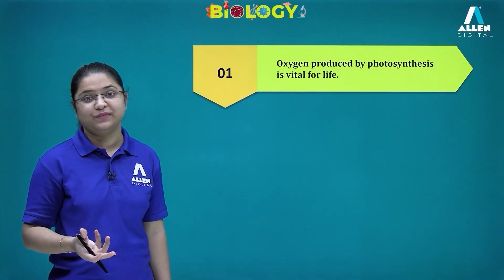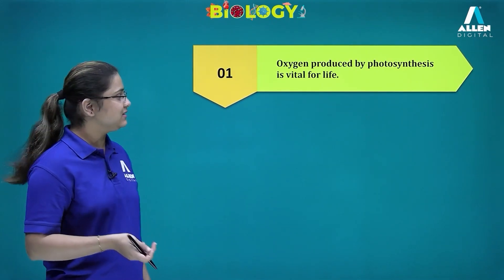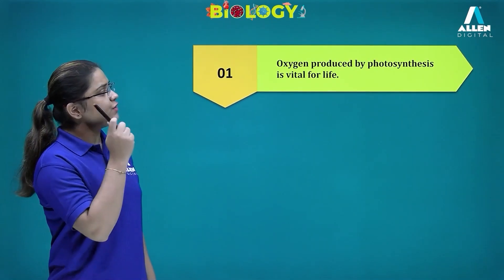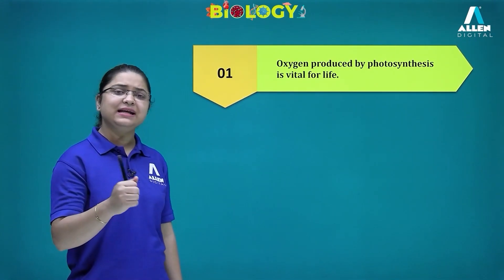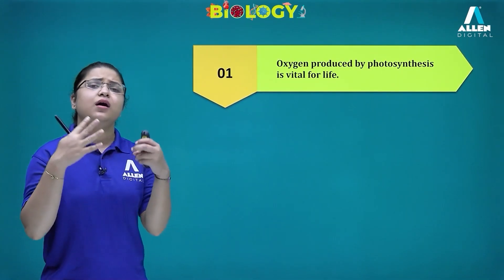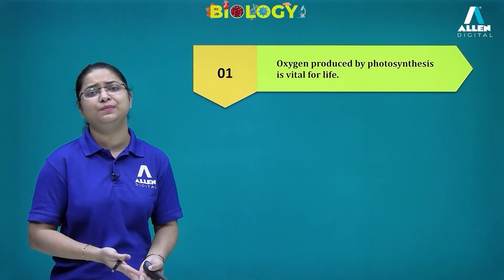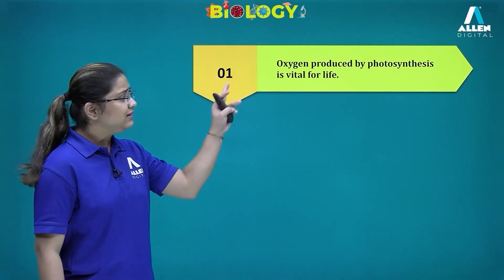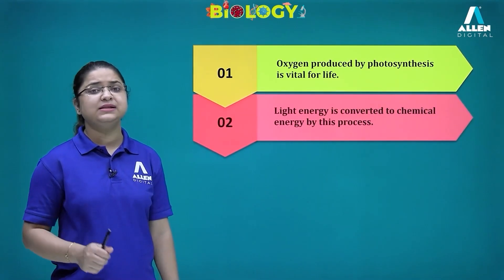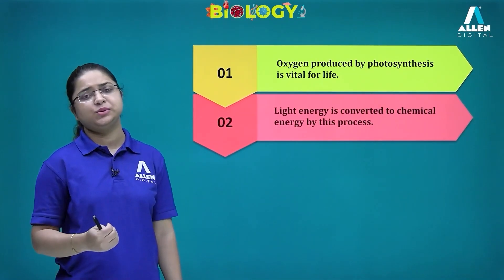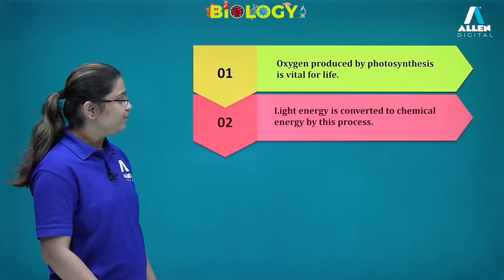Oxygen produced by photosynthesis is vital for life. The photosynthesis process is very important — all organisms are somehow dependent on plants. If oxygen is not produced in photosynthesis, all other living creatures won't survive.